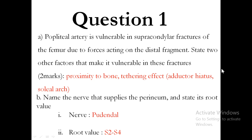At the level of the adductor hiatus there is connective tissue, and at the level of the soleal arc there is connective tissue. So it is anchored at both ends, making it not pliable.